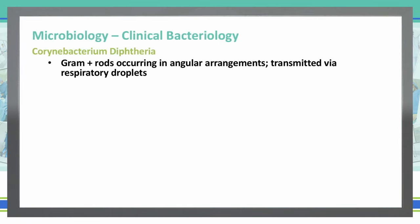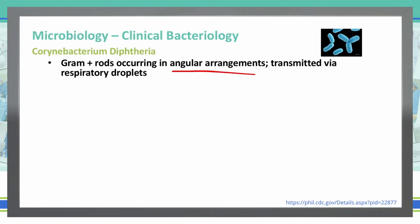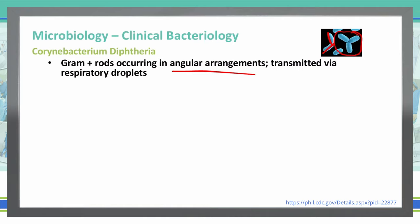Corynebacterium diphtheriae is a gram-positive rod that occurs in angular arrangements. You can see in this picture that they are attached at the ends and at angles — about a 60-degree angle — and that's how you're going to see these under a microscope.